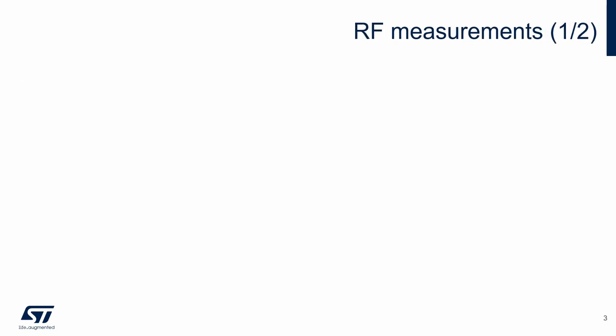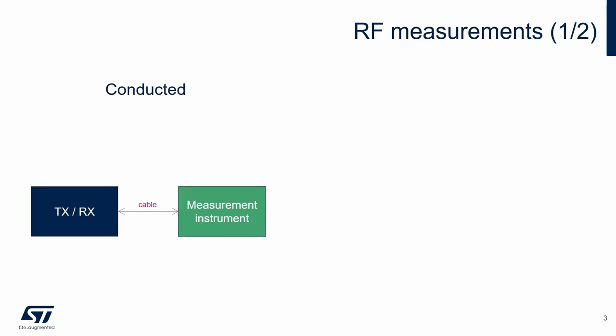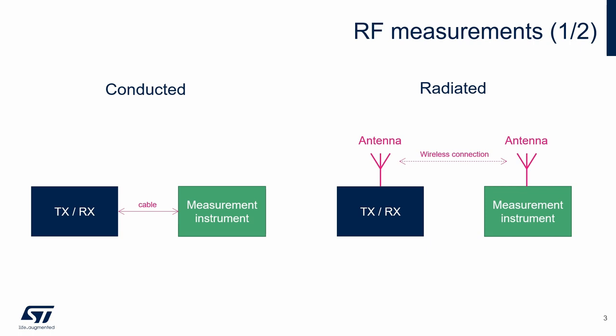RF measurements can be divided into two main groups. Conducted measurements, where the measured RF device and the measuring instrument are connected by an RF cable. Another group is radiated measurements, where the measured RF device and the measuring instrument have antennas and the RF signal goes directly through the air.